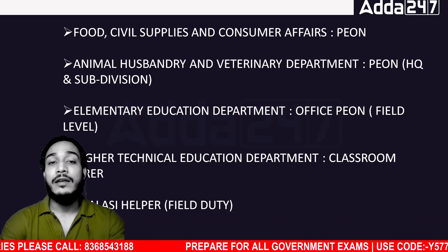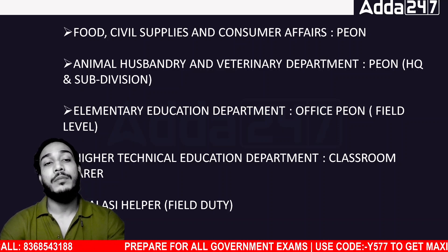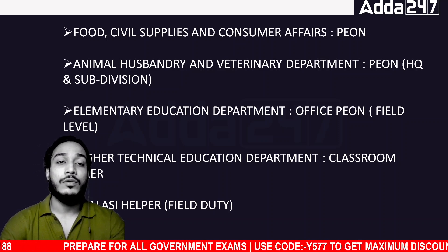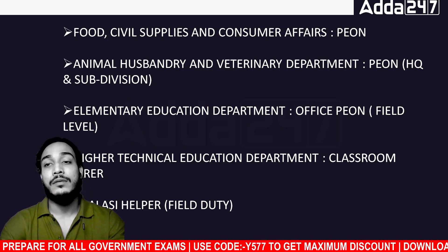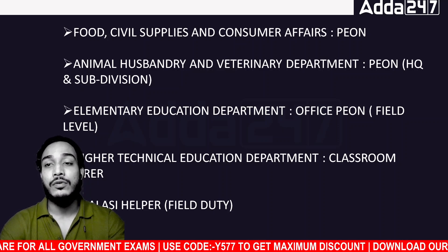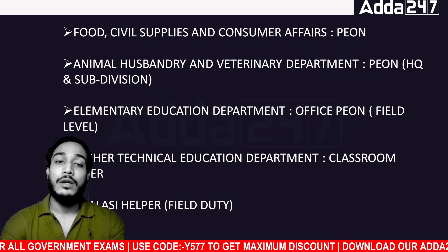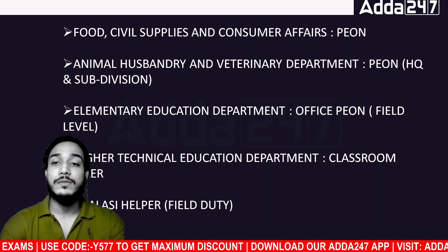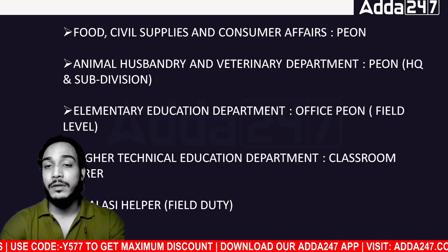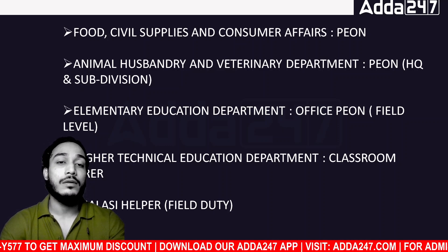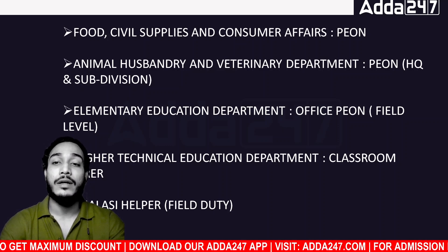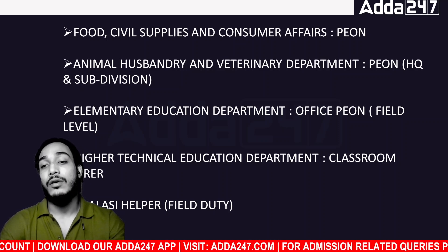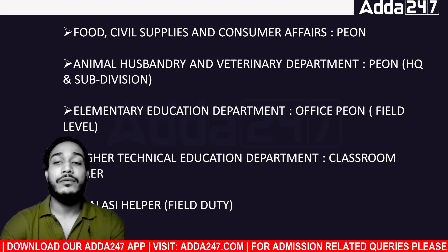Under the Animal Husbandry and Veterinary Department, we have PON at Headquarters and Sub-Division level. We can see the Department of Animal Husbandry and Veterinary Department on our website. Under the Elementary Education Department, we have Office PON at Field Level — meaning field duty.